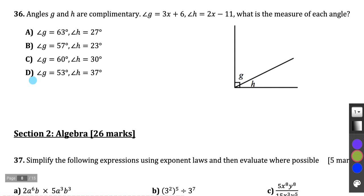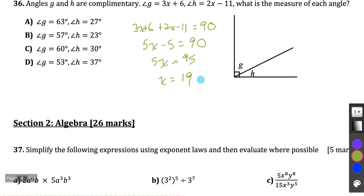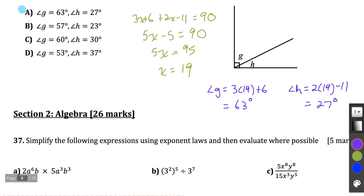Question 36: G and H are complementary, meaning they add to 90 degrees. Setting up the equation: 3x + 6 + 2x minus 11 = 90. Collecting like terms: 5x minus 5 = 90. Adding 5 to both sides: 5x = 95. Dividing by 5: x = 19. Plugging back in — angle G is 3 times 19 plus 6 = 63 degrees, and angle H is 2 times 19 minus 11 = 27 degrees. That's the multiple choice section done — answer A.